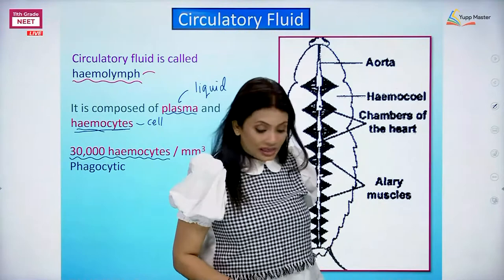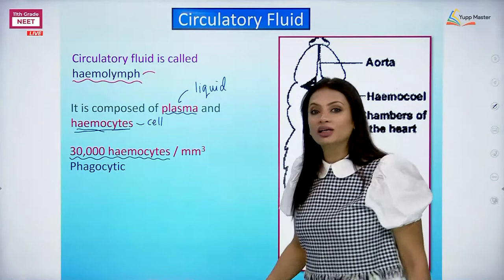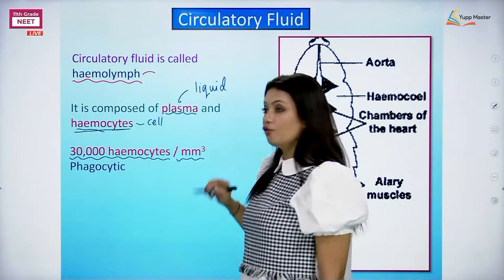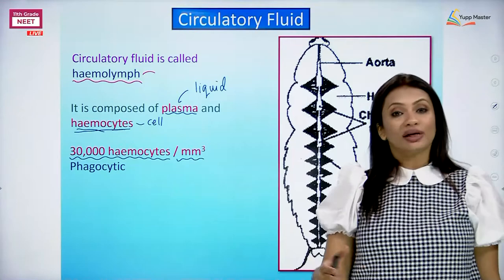The normal WBC count in humans is around 4,000 to 9,000. But for cockroaches, hemocytes are the only cells present in their blood, and there are around 30,000 hemocytes per cubic millimeter. Their basic function is behaving like WBCs - defense, meaning they are going to do phagocytosis. They are phagocytic in action.